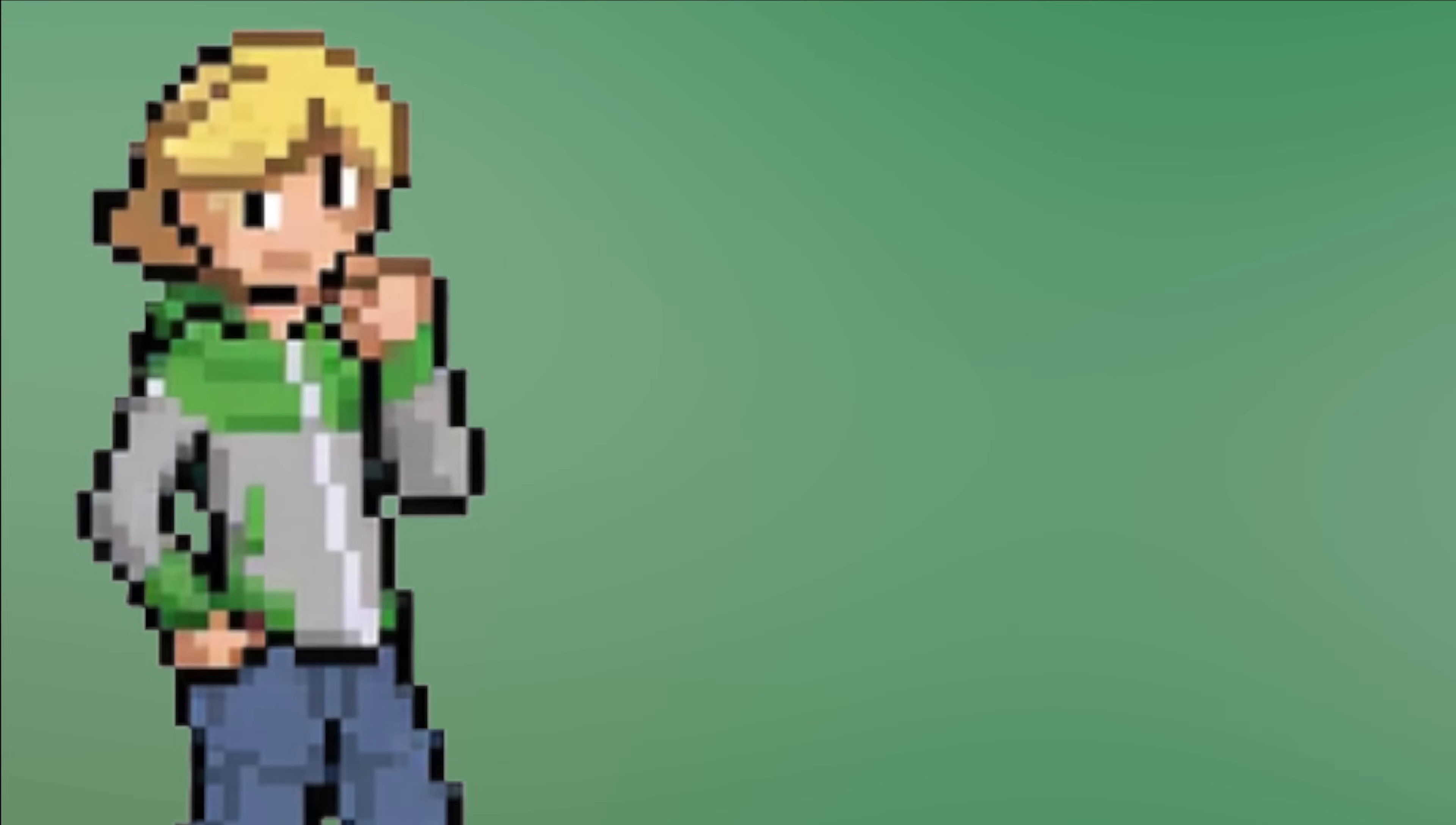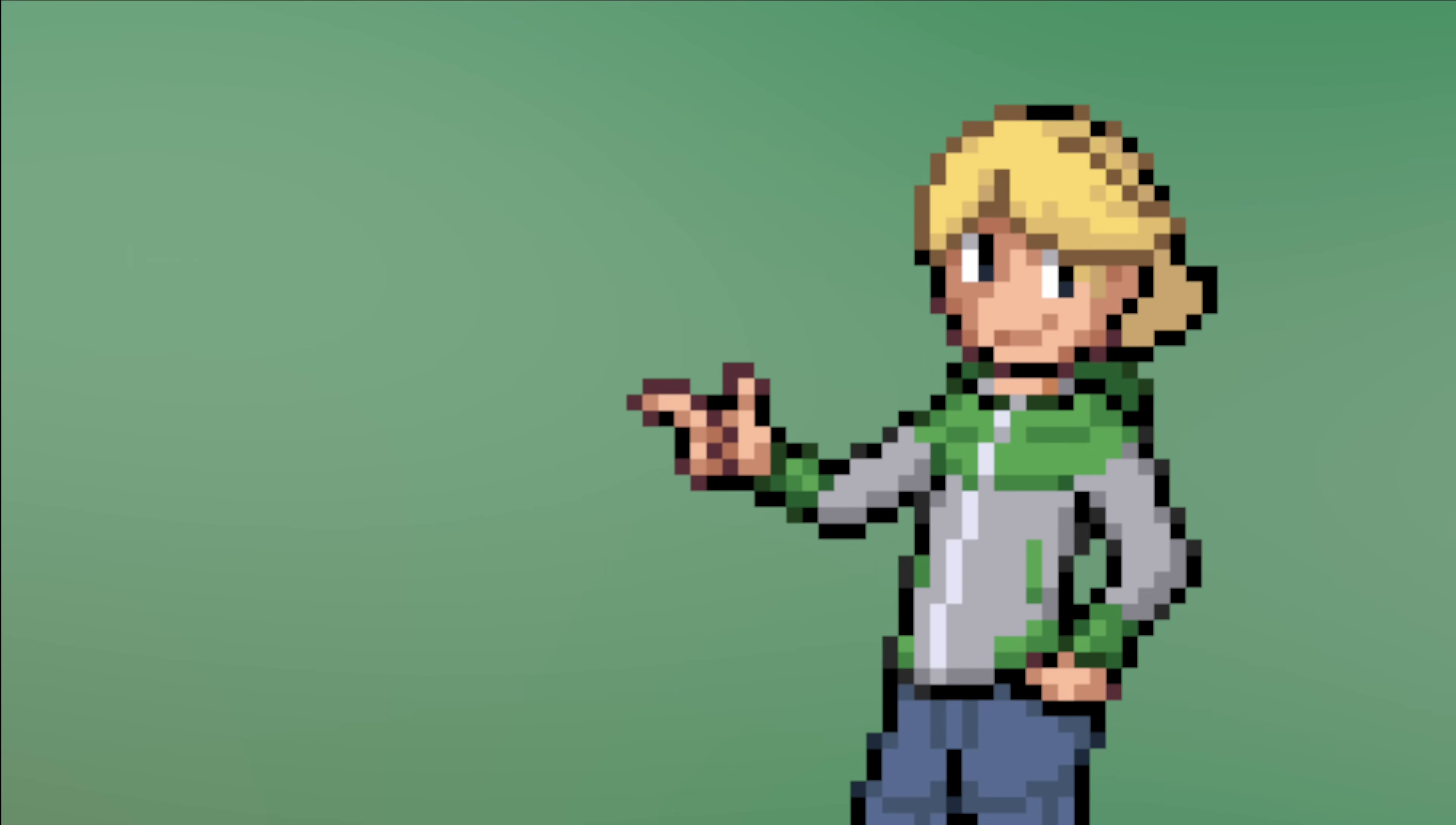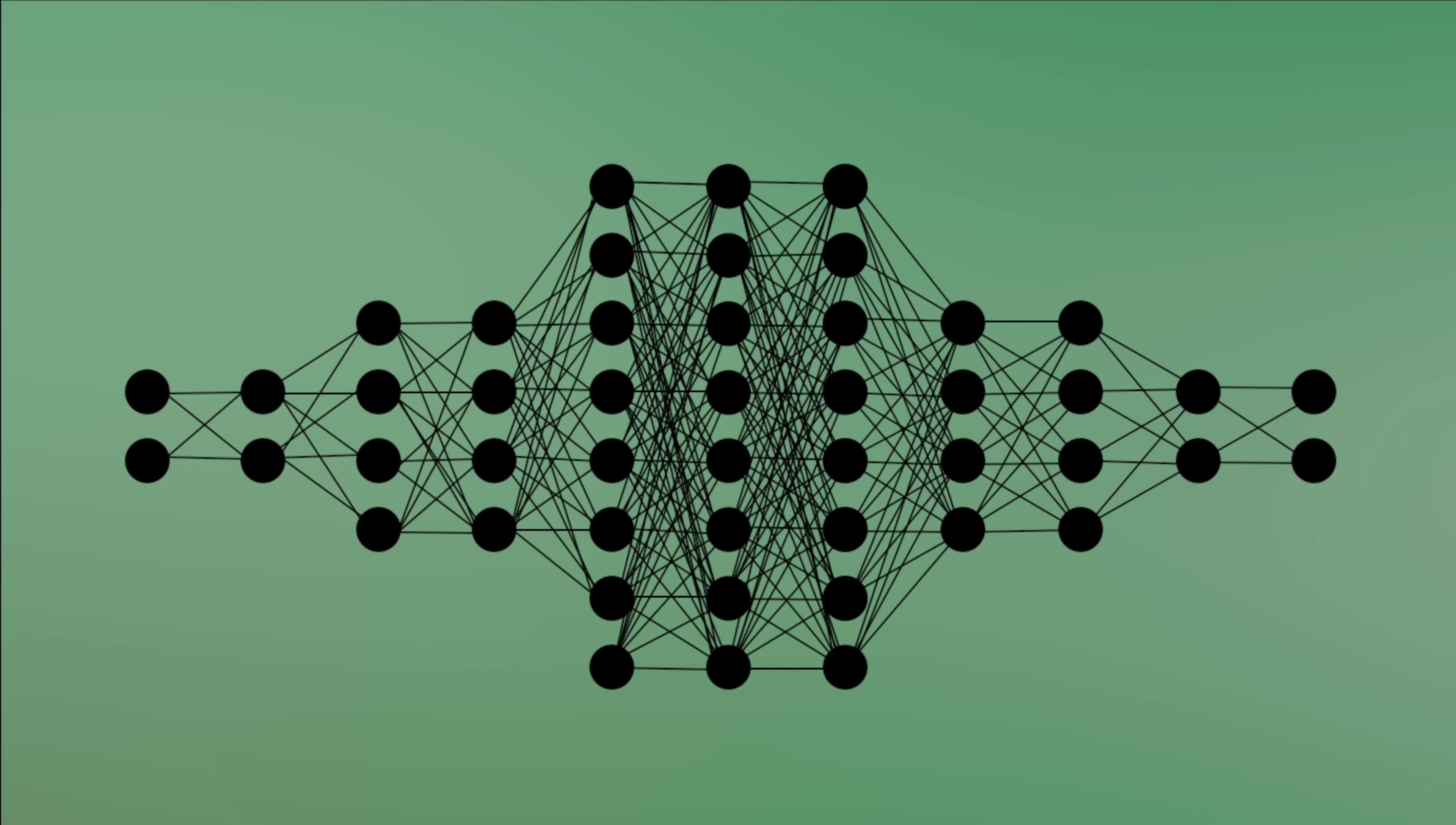And guys I received a few comments now complaining that my titles are wrong and what I'm making here isn't AI. First of all if you think something is wrong you should do it like this guy and not like this one. Lately everyone seems to think that AI simply means deep learning but according to a generally accepted definition deep learning is merely a subset of AI.